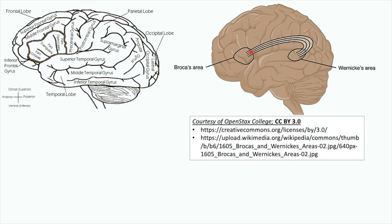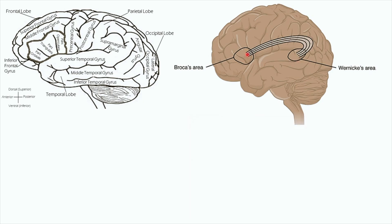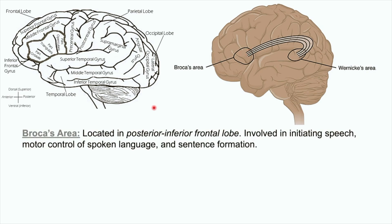Here's an image of the brain showing Broca's area and Wernicke's area. These two language centers are connected to each other, and we'll talk about that connection in a moment. Broca's area is located in the posterior inferior frontal lobe — toward the front and inferior aspect of the brain. Broca's area is involved in initiating speech, motor control of spoken language, and sentence formation. It's very important for controlling speech output.